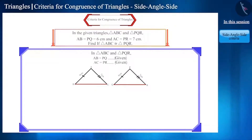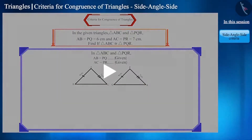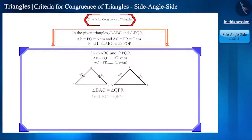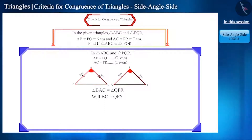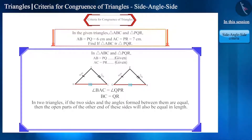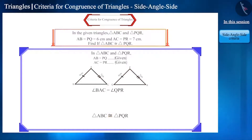Can you tell under what circumstances the third side of these triangles can be equal? You can also pause the video for thinking. If the angles made by these two sides are equal, then will the third side also be equal? Due to the angles being the same, the open portions of the other side will also be equal in length, and then we can say that these two triangles are congruent.